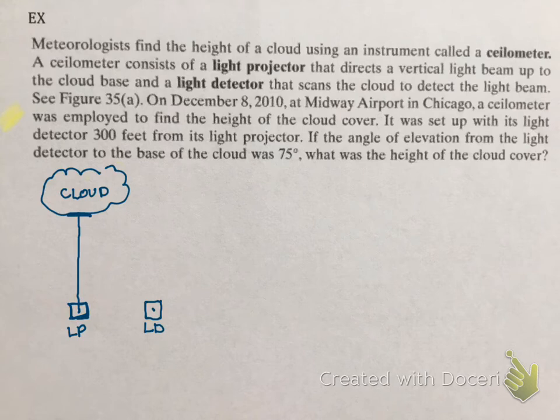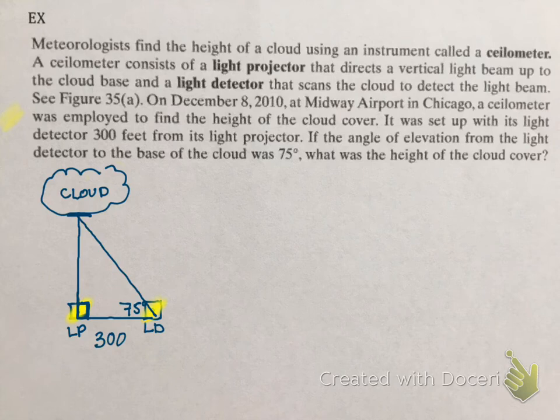So the light detector is not in the same place as the light projector. The light detector is usually placed on the side of where the light projector is. So I'm going to go ahead and draw that out. On December 8, 2010, at Midway Airport in Chicago, a ceilometer was employed to find the height of a cloud cover. It was set up with a light detector. Once again, our light detector is right underneath the cloud. And it was set up with a light detector 300 feet from the light projector. So here's the light detector. Light projector is over here. These two, we're going to assume that the runway is completely level. So these two lines are going to form a 90 degree angle. And then it says the angle of elevation from the light detector to the cloud base is 75 degrees. So we know the light projector to the light detector is 300 feet. They want to know what the height of the cloud cover is.